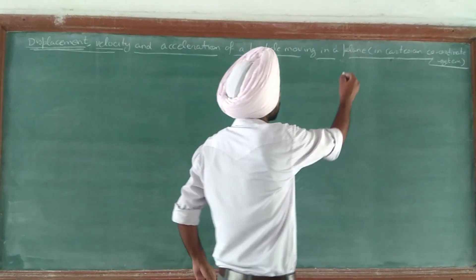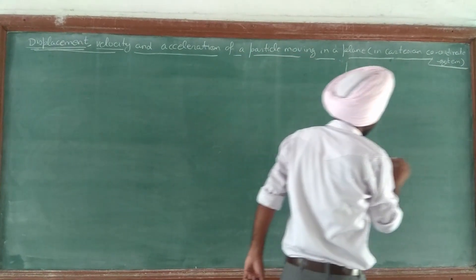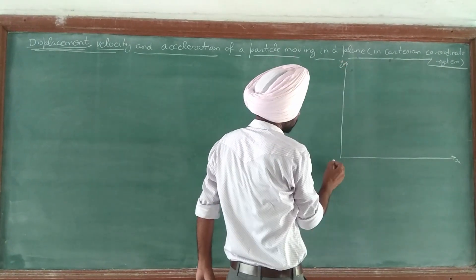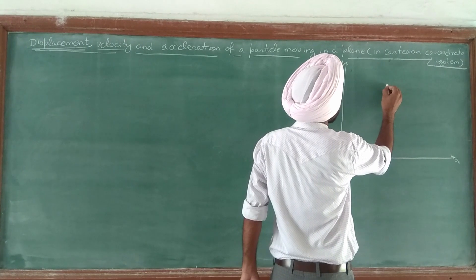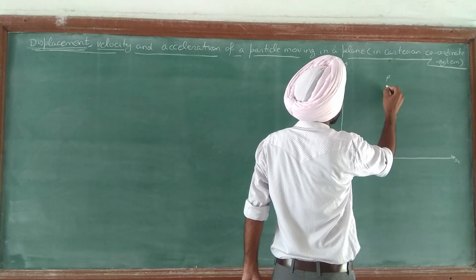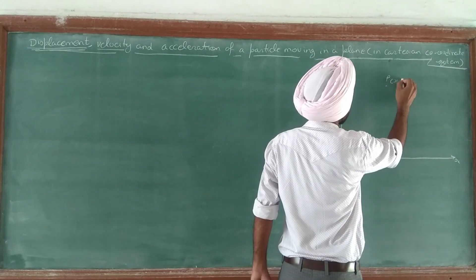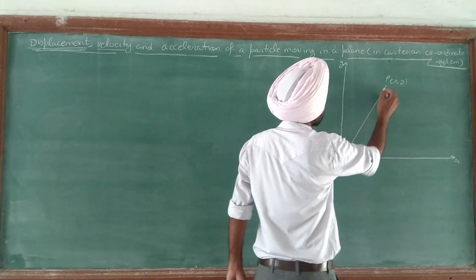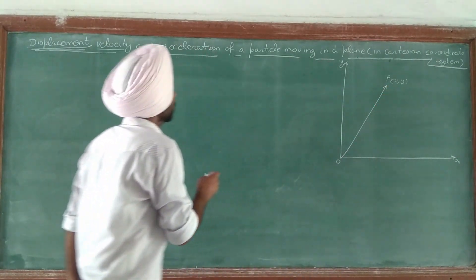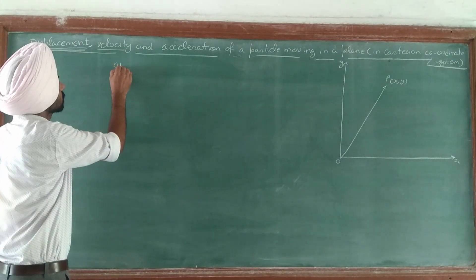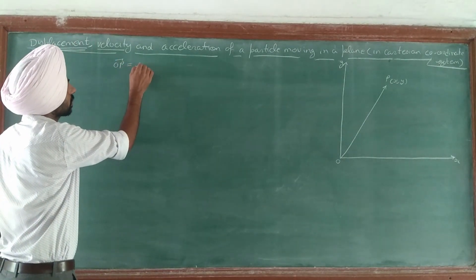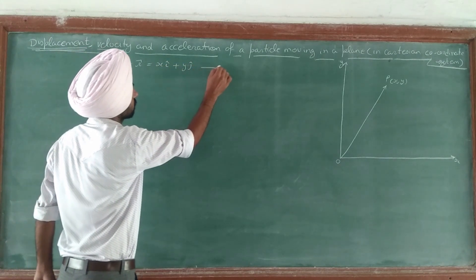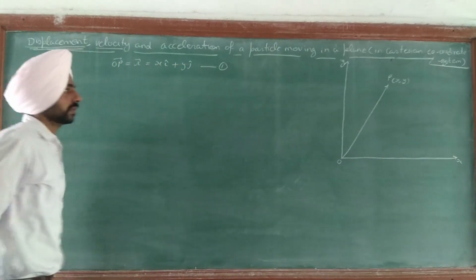Suppose we have an x-y plane with origin at point O. Initially, let us consider the particle is at point P whose position vector is defined by x and y. So vector OP, vector OP is vector r = x·i-cap plus y·j-cap. That is equation number 1.